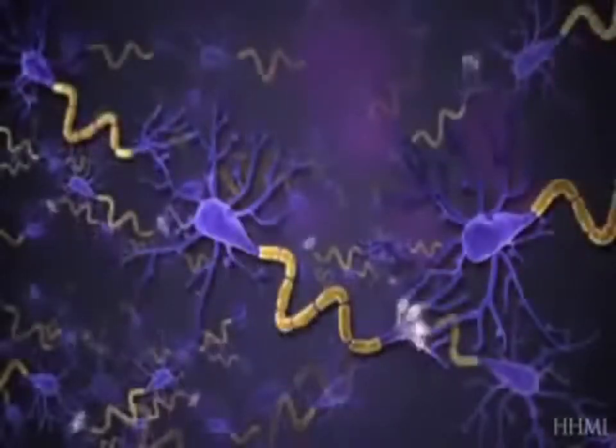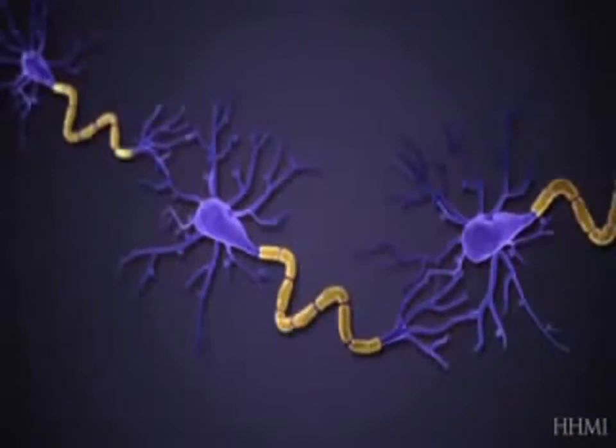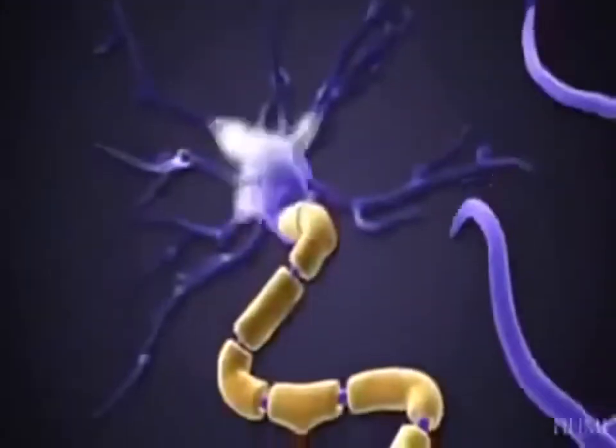We're going to be looking at these electrical impulses, these flashes, which are called action potentials, crossing three neurons in a circuit.